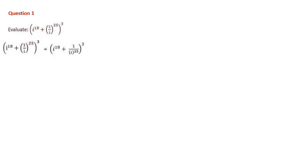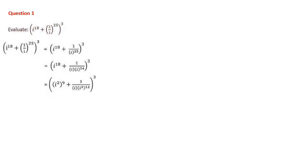1^25 is 1 itself, and i^25 is in the denominator. Then, i^18 plus 1 divided by i^25 — we can split i^25 to the nearest even number close to 25, which is 24. So, i^25 = i^1 × i^24. Here, i^18 we can write as (i²)^9, because 9 × 2 = 18.